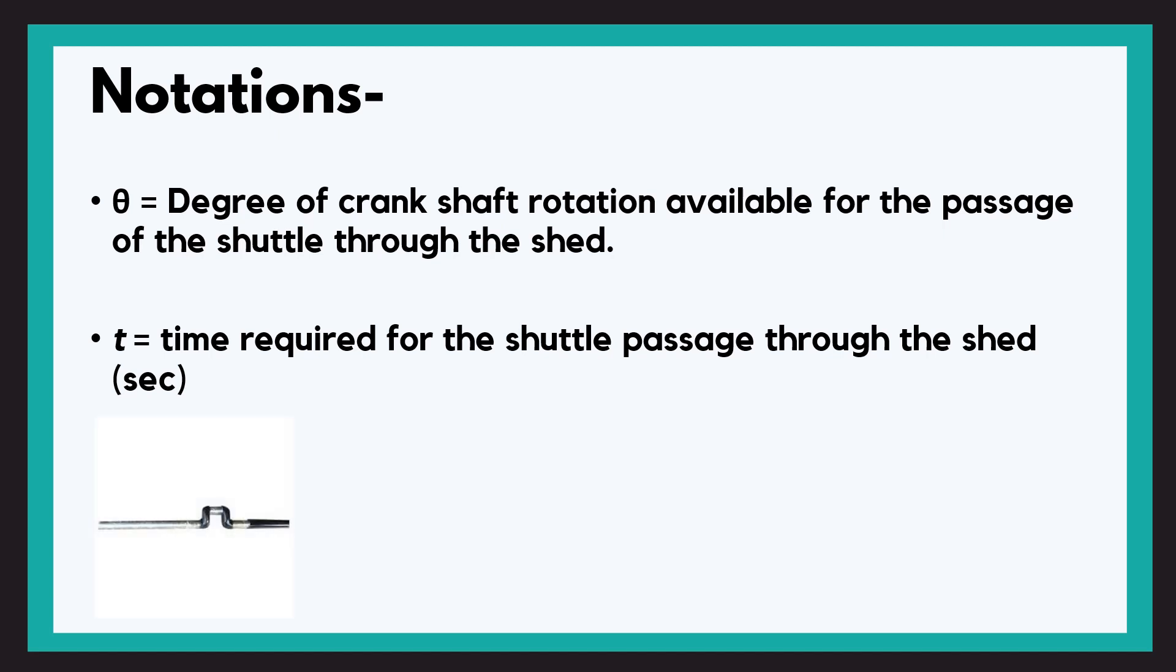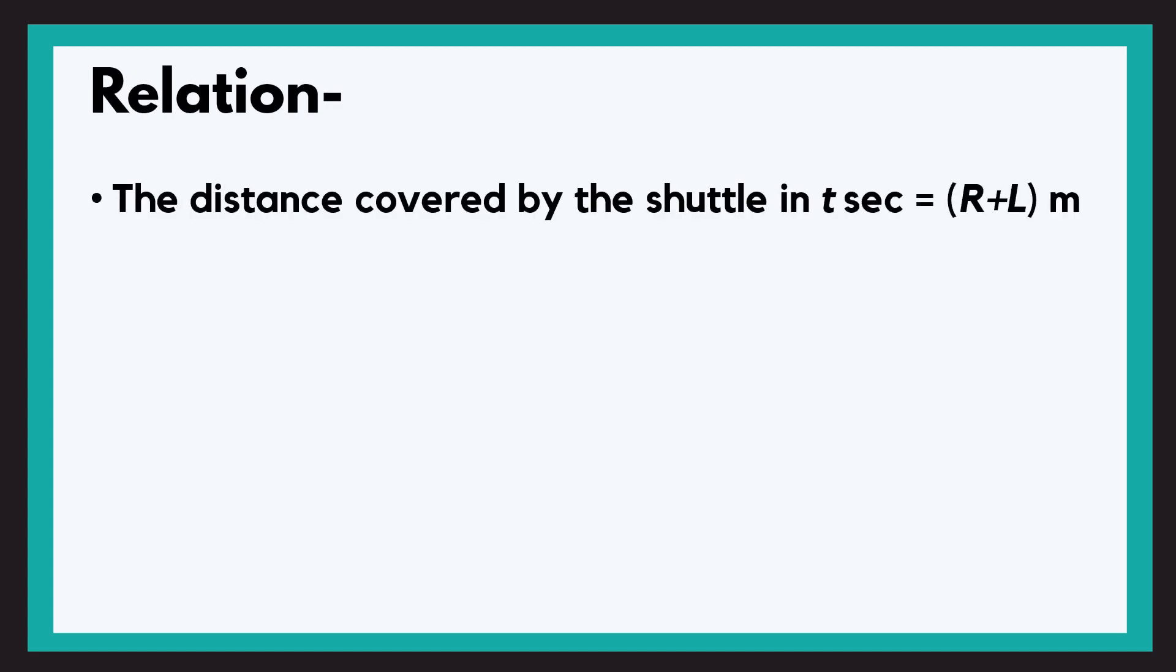Alright, so coming down to the derivation and the relation. Now the distance covered by the shuttle in t seconds will be R plus L. How? We are talking about the distance that is covered by the shuttle tip. So it will be R, that is the warp width in the reed, plus also some certain shuttle length, right?